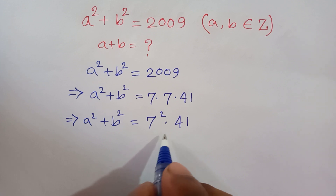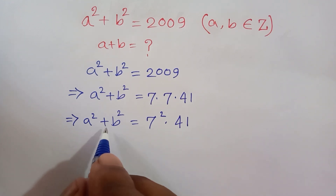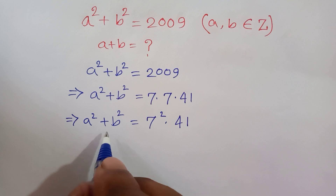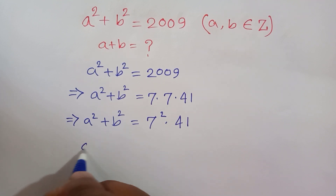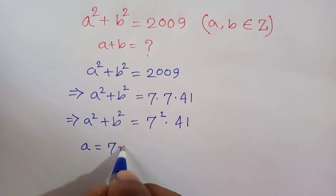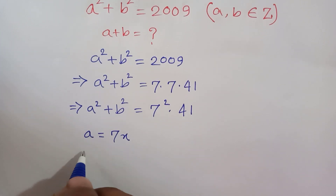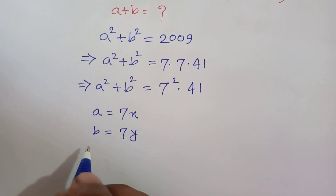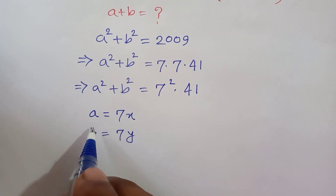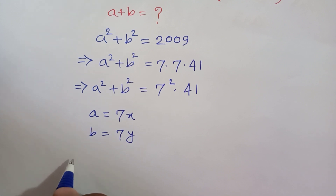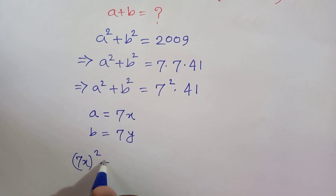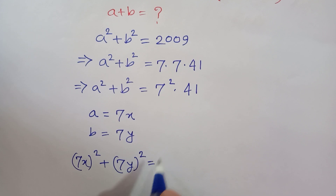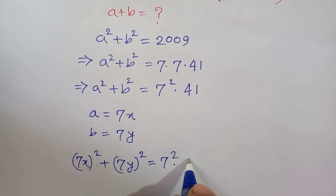Now, the sum of two square numbers is a product of a square number, so both a and b are divisible by 7. We consider a is equal to 7x and b is equal to 7y. Substituting these values, we get: (7x)² plus (7y)² is equal to 7² times 41.